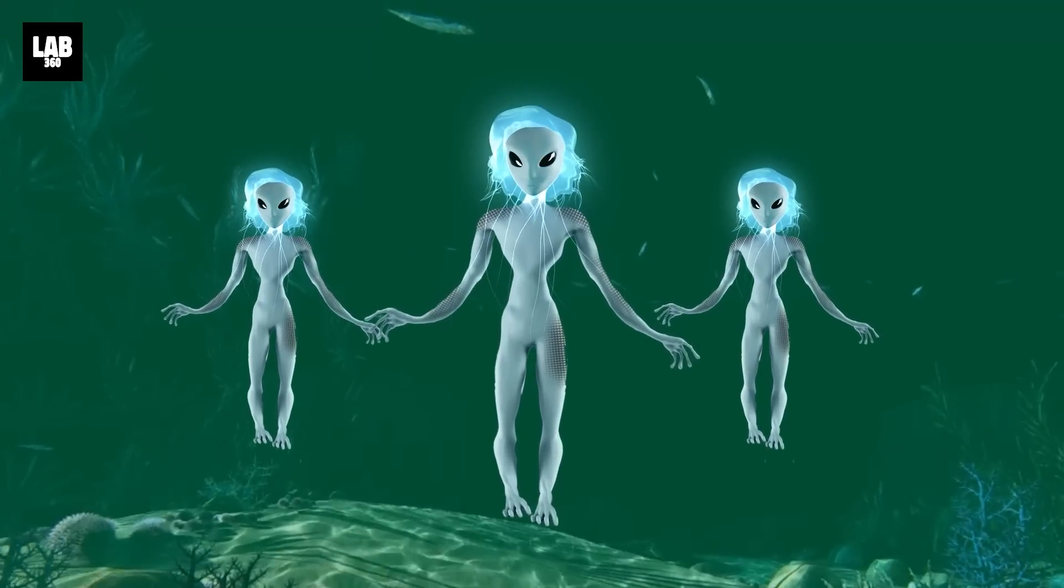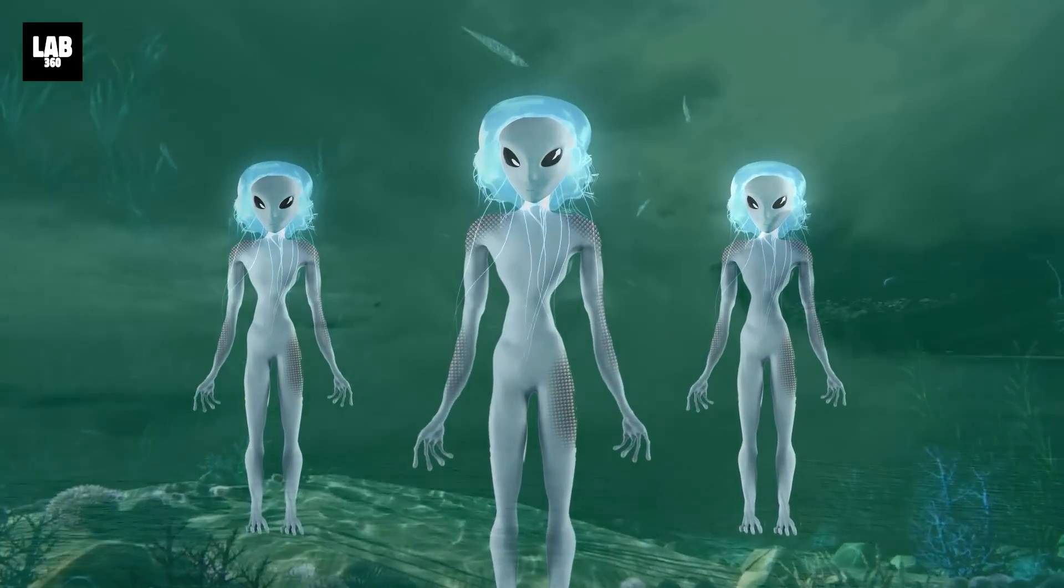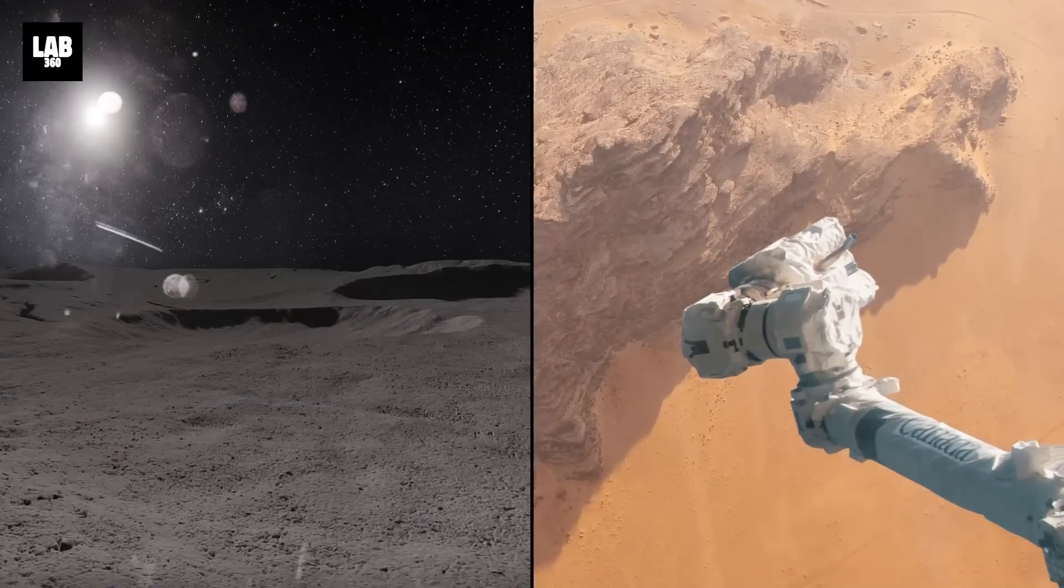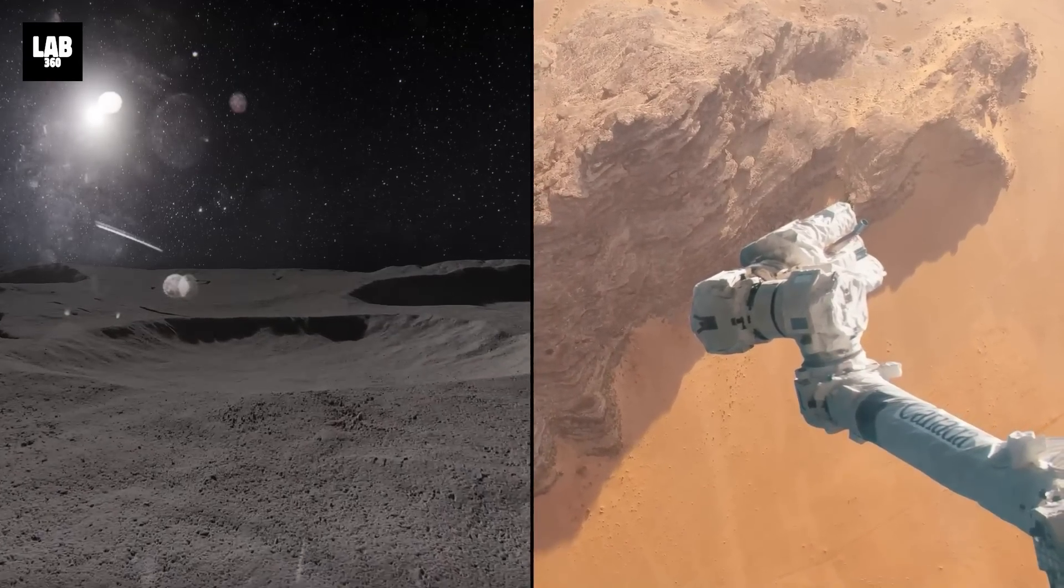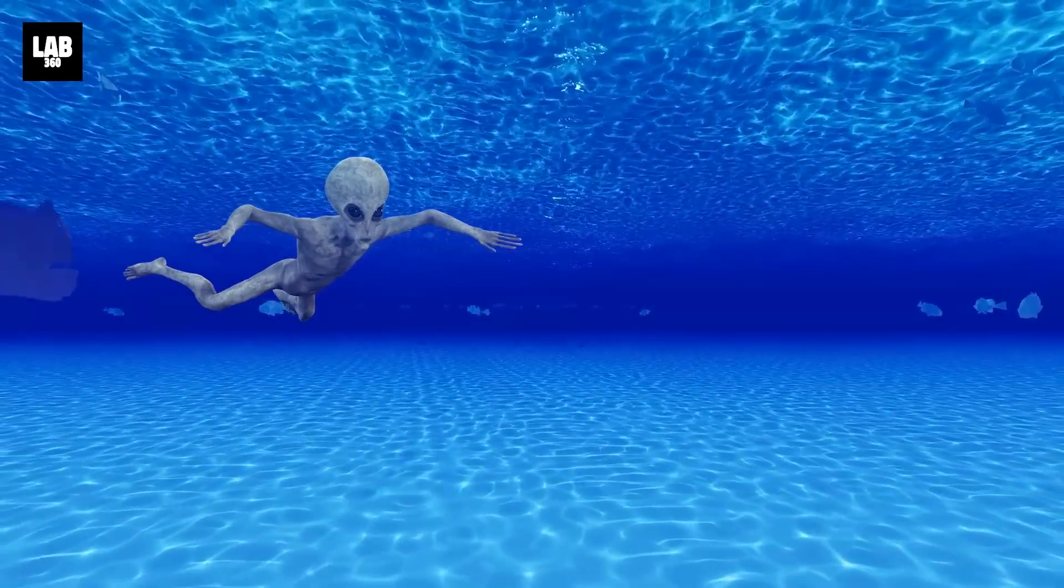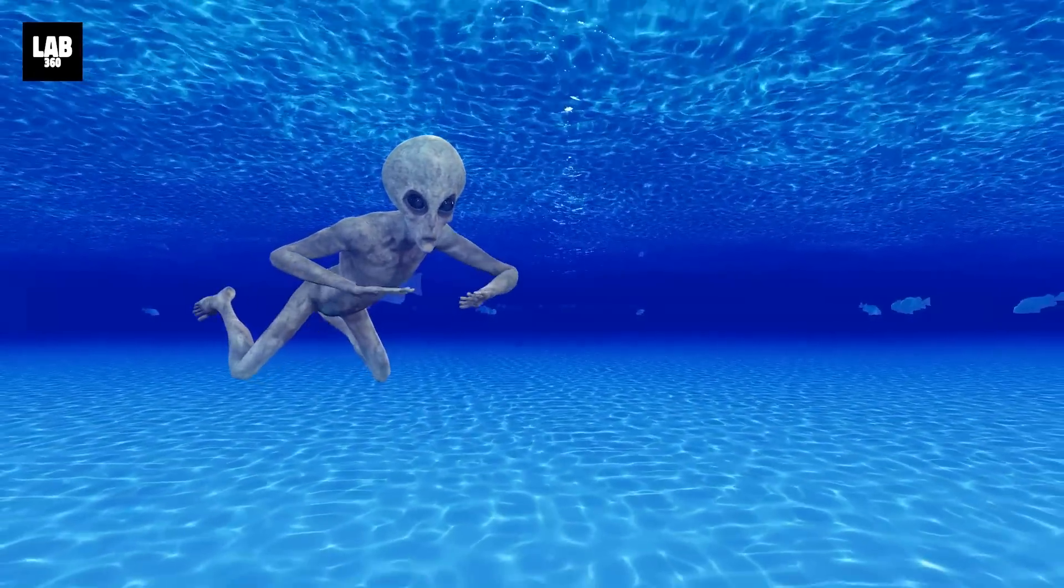Our oceans and other waterbodies are perfect hideouts for them because we only know 5% of ocean. Comparatively, we know more about the surface of the moon or Mars than our own oceans. This is perfect place for them to hide and thrive. Think about it.